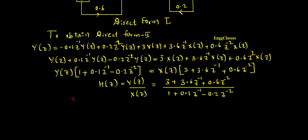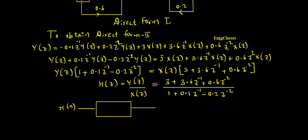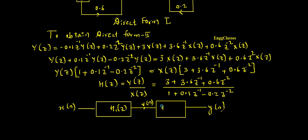So now I am going to get the transfer function H(z), which is output Y(z) divided by X(z). Rearranging: Y(z) = [(3 + 3.6·z⁻¹ + 0.6·z⁻²) / (1 + 0.1·z⁻¹ - 0.2·z⁻²)] · X(z). For Direct Form 2, the input x(n) feeds to a block H1(z) — an all-pole system — and then to a block H2(z) — an all-zero system — giving the output y(n). The intermediate signal between them I call v(n).